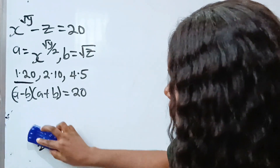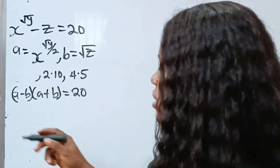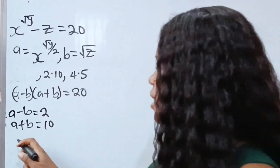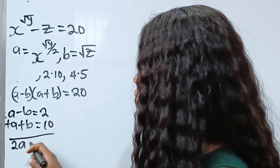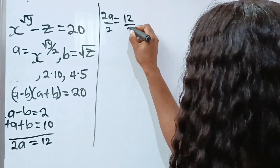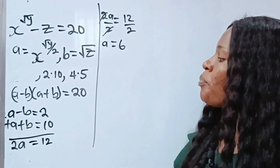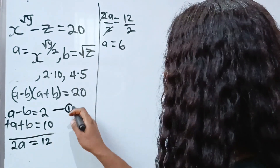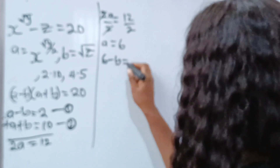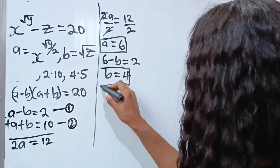Going to the second case: a minus b equals 2 and a plus b equals 10. Adding, 2a equals 12, so a equals 6. That is a natural number! Substituting a equals 6 into the first equation: 6 minus b equals 2, so b equals 4. We have gotten the value of a and b using the second case.